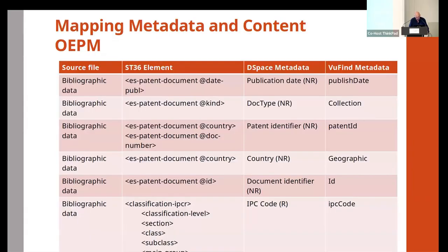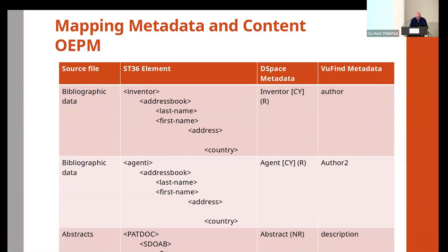This slide shows the metadata mapping: in the source files you have the ST36 elements as input metadata collected from the national patent office dump files. The third column shows the equivalent in the DSpace configuration, and the last column shows the mapping to VuFind metadata. This is provided just for reference.